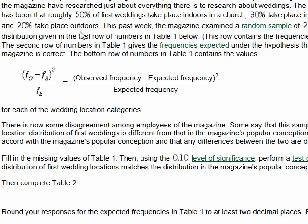This week the magazine examined a random sample of 250 first weddings and found the distribution in the first row of numbers of columns in the table below. This row contains the frequencies observed in their sample.